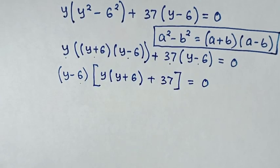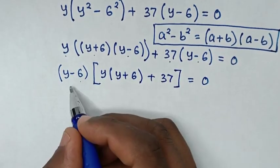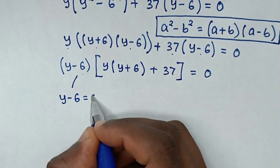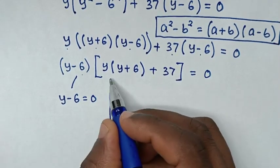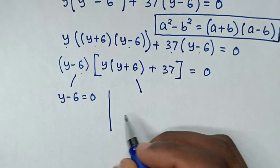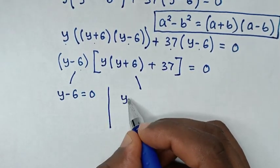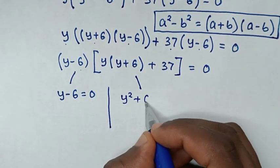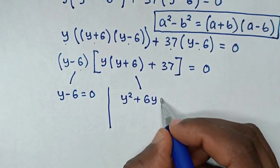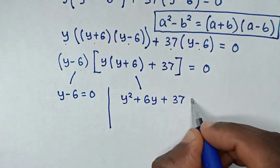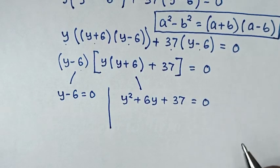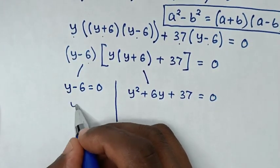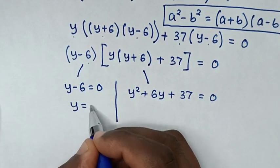Here (y−6) is common, so we factor it out: (y−6)[y(y+6) + 37] equals 0. This gives two solutions. The first solution is y − 6 = 0, so y = 6. The second solution is the quadratic y² + 6y + 37 = 0.